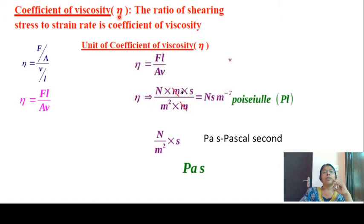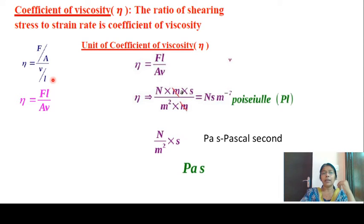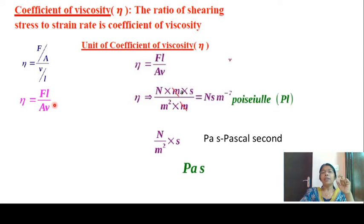The coefficient of viscosity relates shearing stress to shearing strain rate. The coefficient of viscosity eta is expressed as: eta equals F divided by A, divided by V divided by L, which gives eta equals F times L divided by A times V. The unit is: force in Newtons, length in meters, area in meters squared, velocity in meters per second. Simplifying, the unit is Newton-second per meter squared.